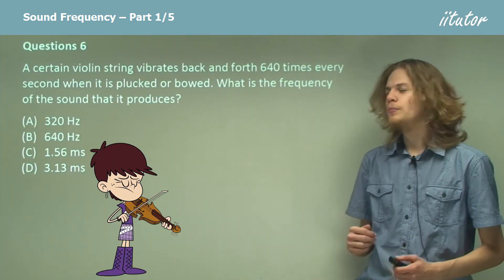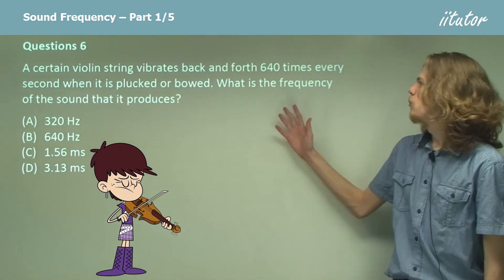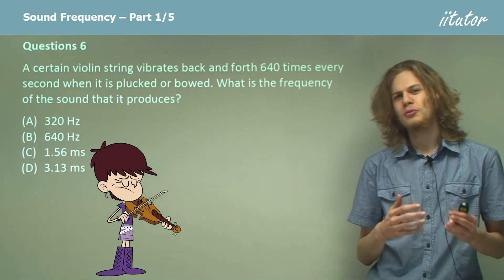A certain violin string vibrates back and forth at 640 times a second. What is the frequency of the sound that it produces? Now remember the frequency of the sound wave is determined by its source.